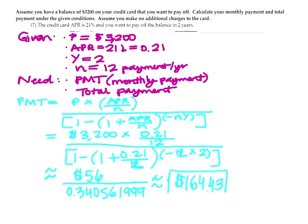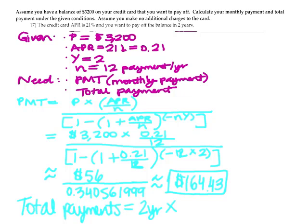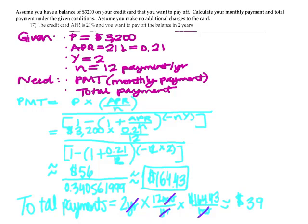That's the monthly payment for the credit card. To calculate total payments, multiply the 2-year term by 12 months per year to convert to months, then multiply by the monthly payment of $164.43. The total payments are approximately $3,946.42.